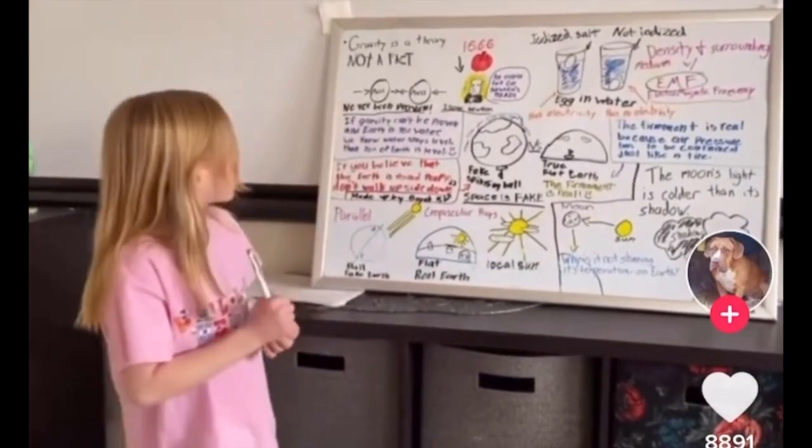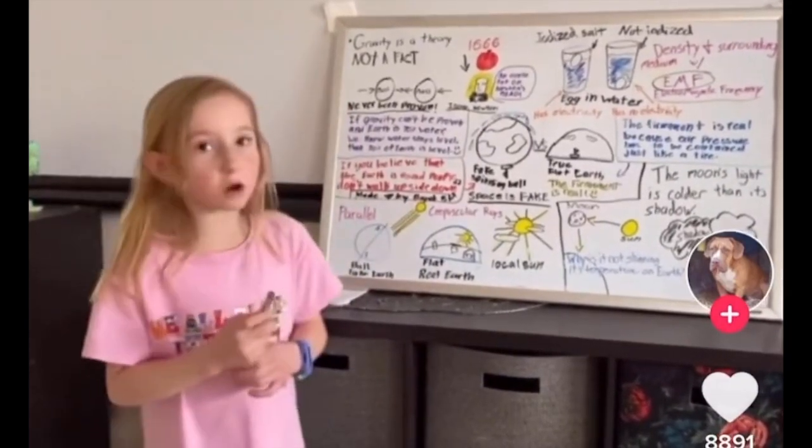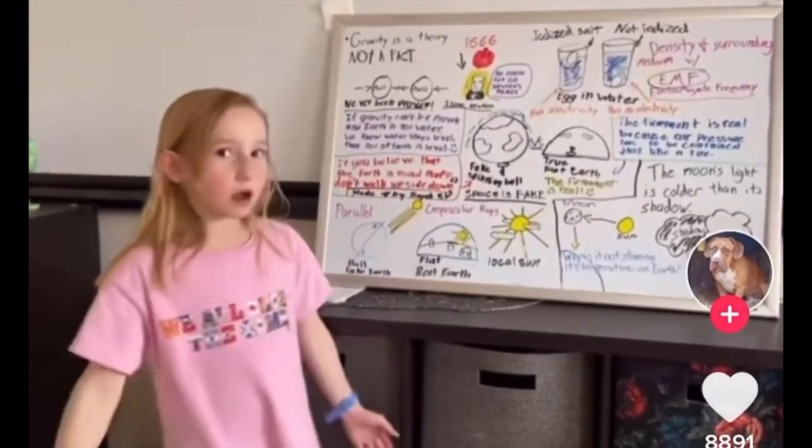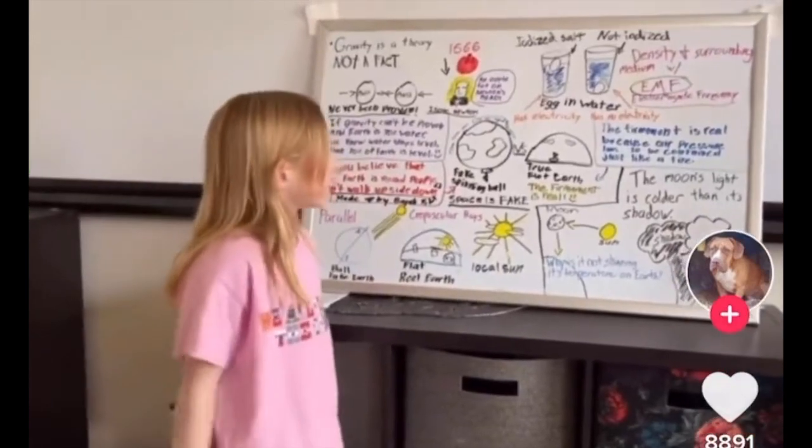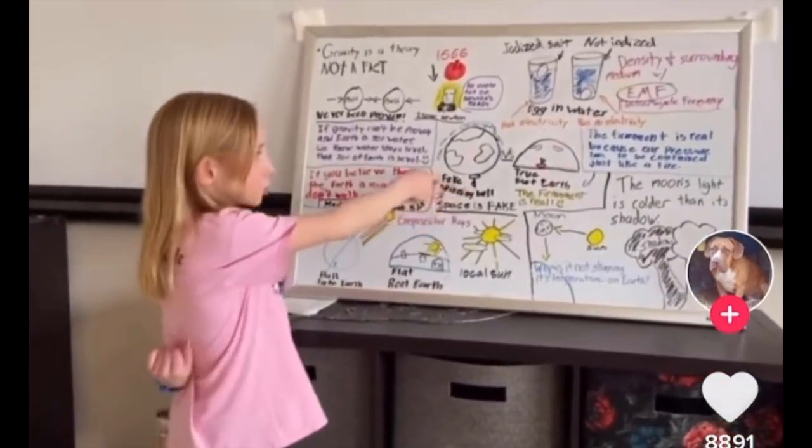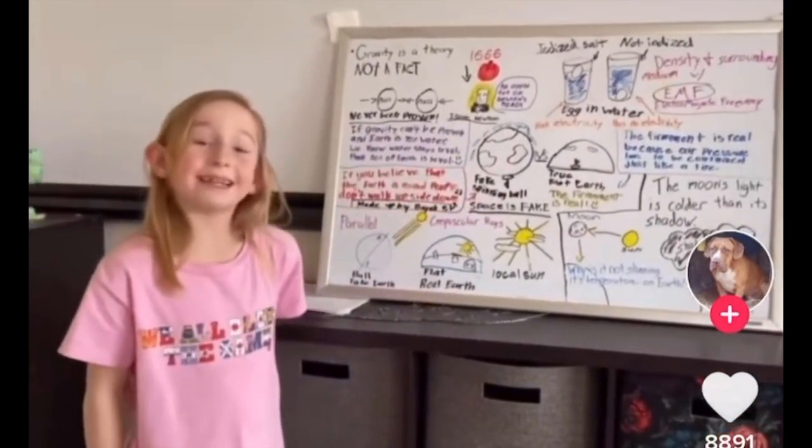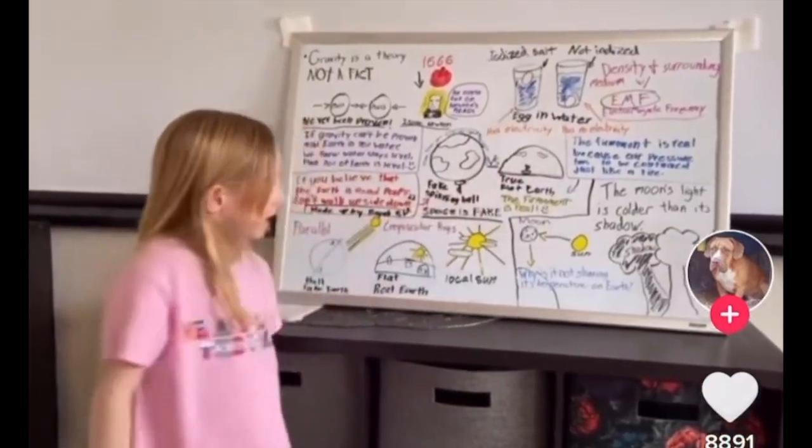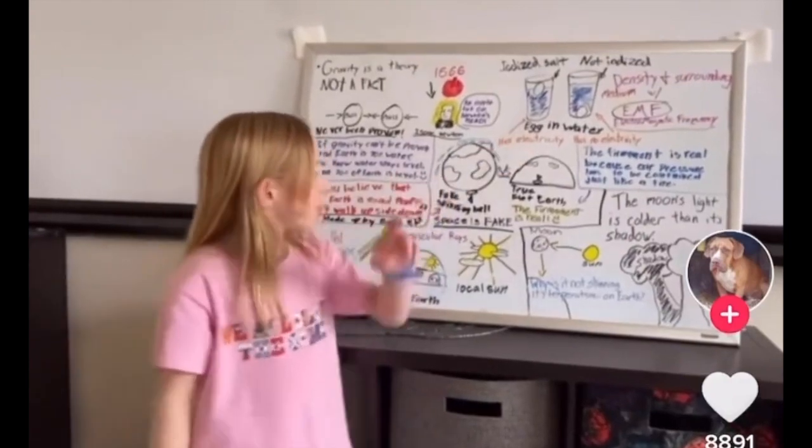If people believe that the Earth is round, people don't walk upside down. Same with a boat, it doesn't sail upside down. They think this is true, but no, it is not. This is our true flat Earth, and the thing around it is the firmament.